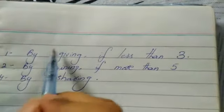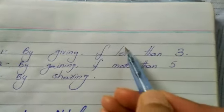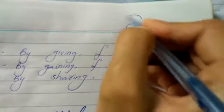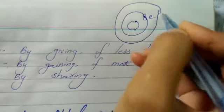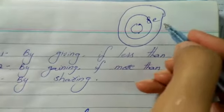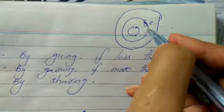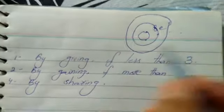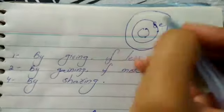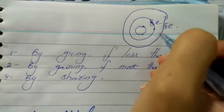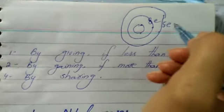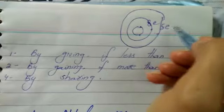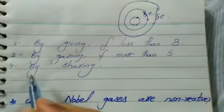The first way is by giving — if an atom has less than 3 electrons in the outer shell, it can give them away. The second way is by gaining — if an atom has more than 5 electrons, it can take electrons from another atom. For example, if there are 5 electrons, take 3; if 6, take 2; if 7, take 1 electron from another atom.